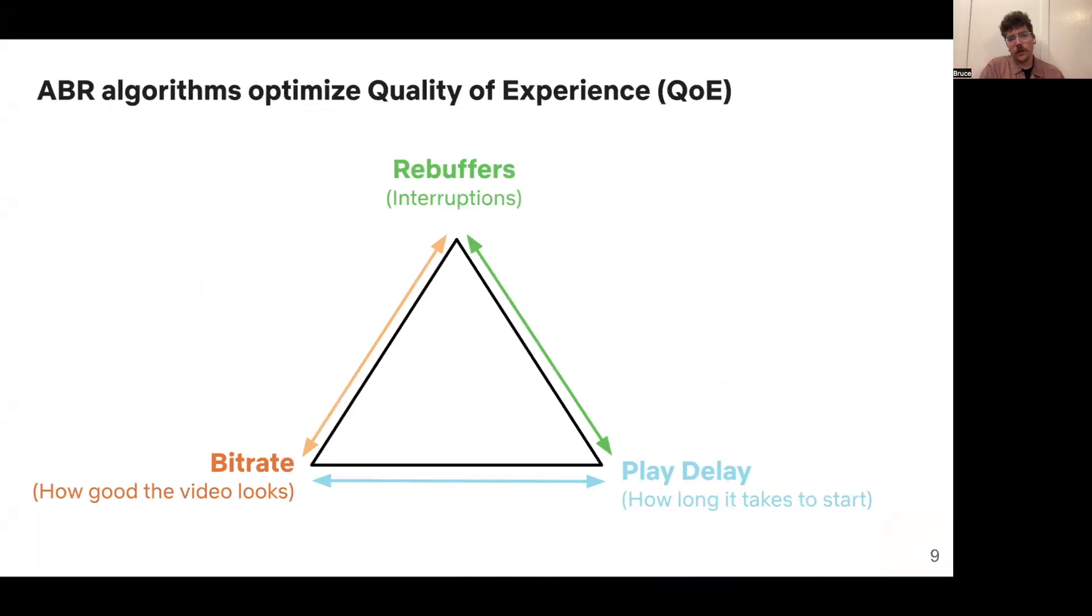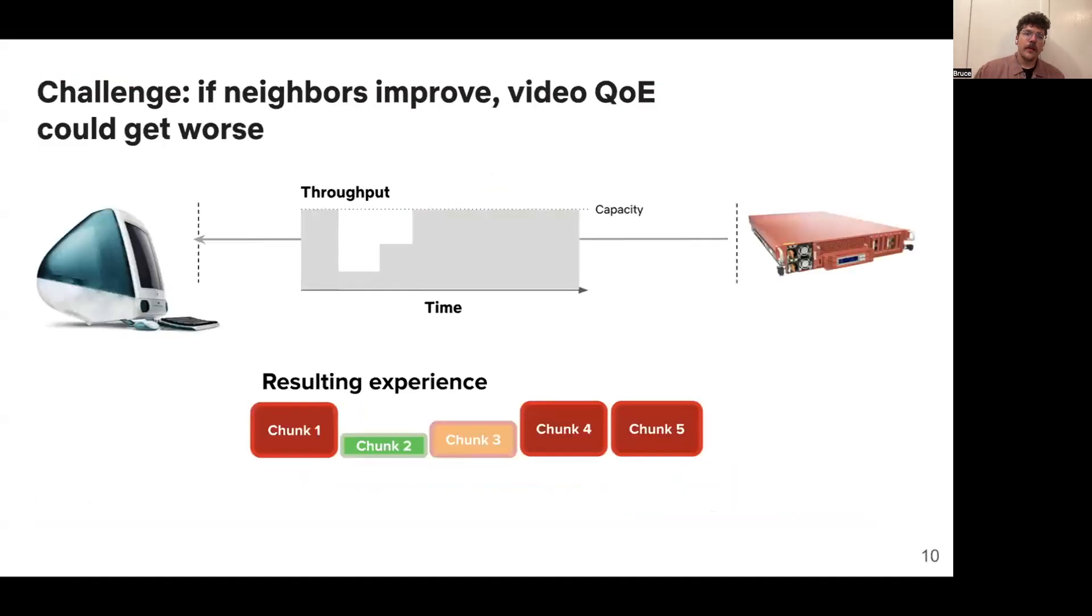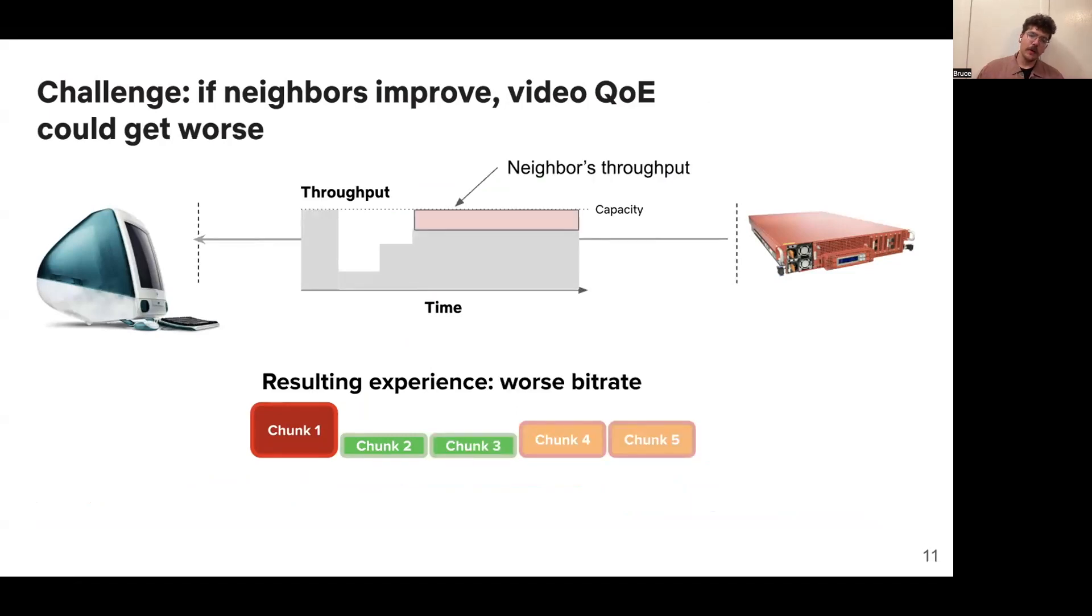In general, these ABR algorithms run sophisticated optimization algorithms to optimize for overall quality of experience, or QoE, of the video, which is a trade-off between bitrate, rebuffers, and play delay, or how long it takes to start playing the video. The challenge, though, is we tend to think about these congested networks as a zero-sum sort of situation, where if the neighbors improve, that means the video traffic itself must get worse. Maybe we give up some throughput to the neighbor, and this means that video is worse because it's getting worse bitrate.